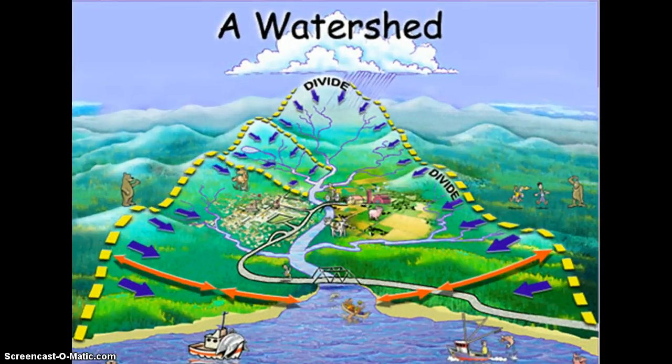A good water sampling design can tell you a great deal about the watershed surrounding your stream, river, wetland, lake, reservoir, or coastal system. If you are investigating a problem area, sample a minimum of three times: once above the suspected problem, at the site, and downstream of it.